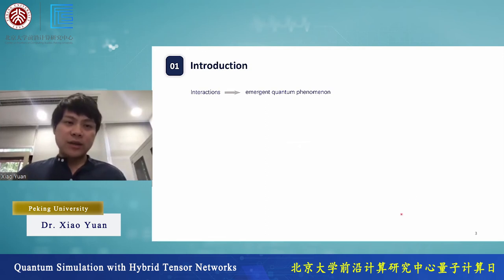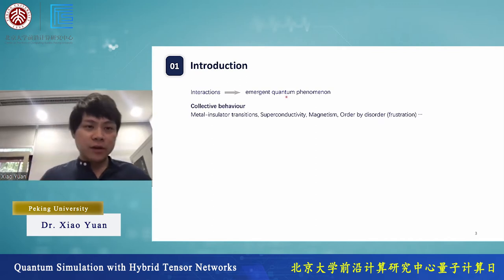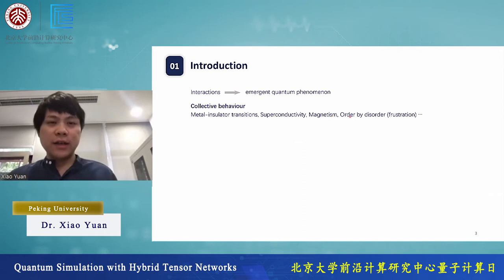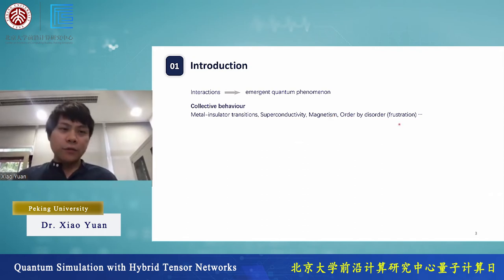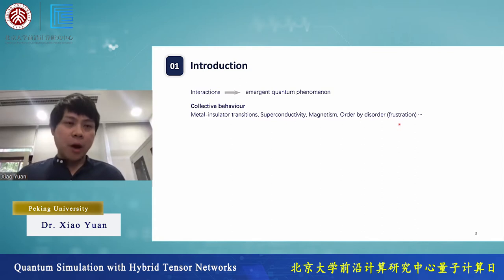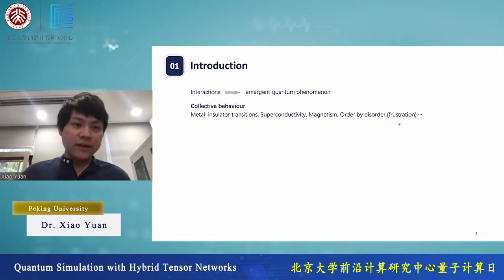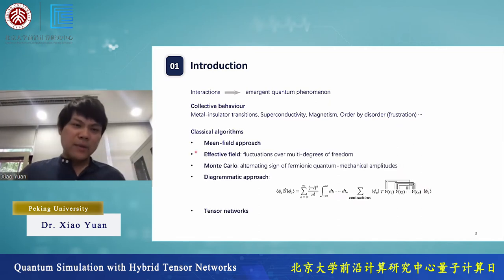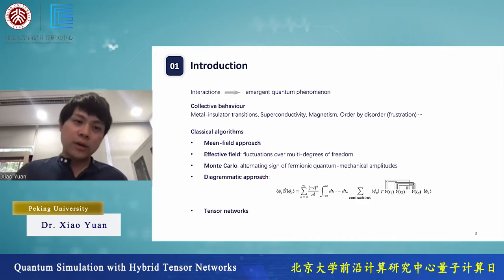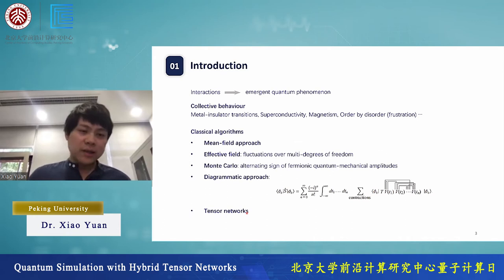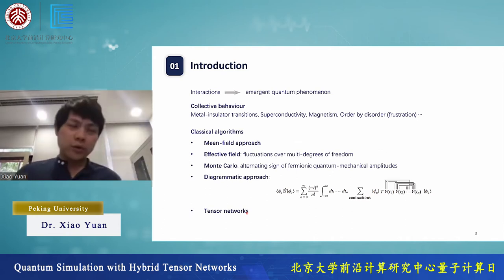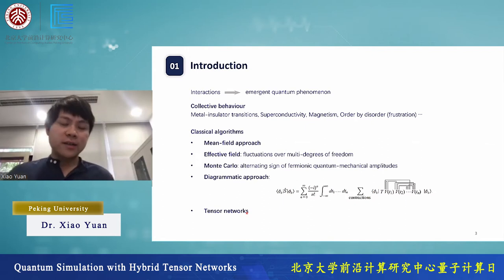In physics, we are interested in calculating emergent quantum phenomena, such as collective behaviors like phase transitions, superconductivity, and magnetism. For studying those behaviors, there are many very powerful classical techniques that have been invented—for example, mean field theory, effective field theory, quantum Monte Carlo, diagrammatic approaches, or the recently very popular tensor network approach that Professor Zhang just discussed.